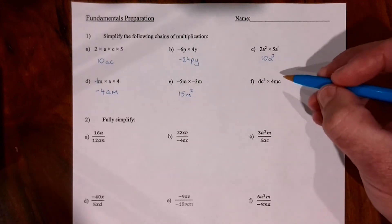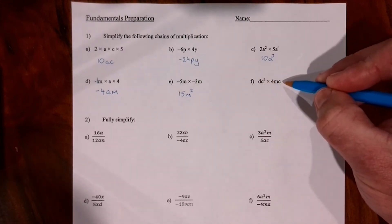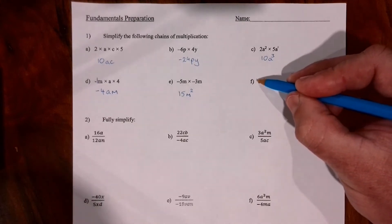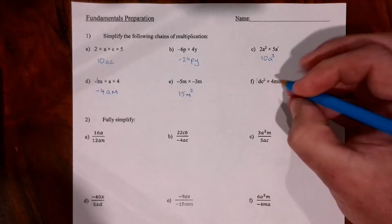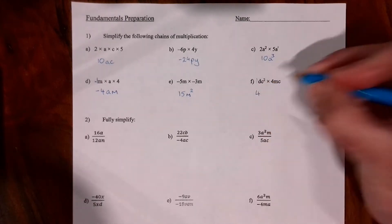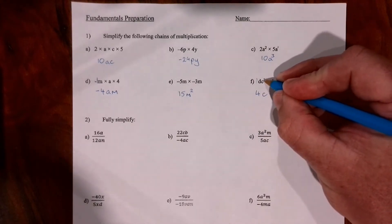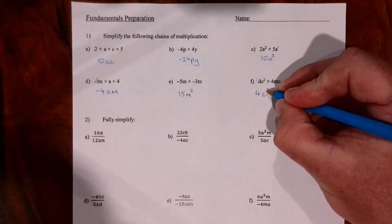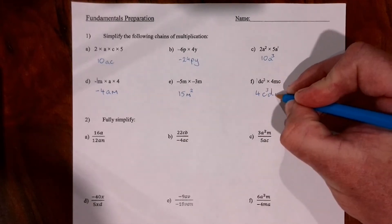Question 1f has d's, c's, and m's. We collect up our terms as we go. There's a 1 in front that we can't see, so it's really 1 times 4 — one group of dc squared — giving 4. Then we have c multiplied by itself multiplied by c again, then a d, and then an n.